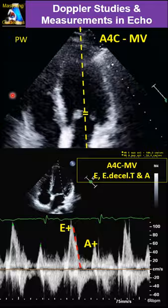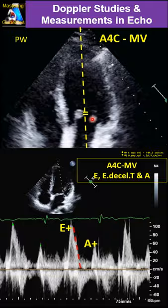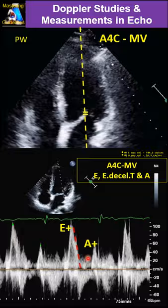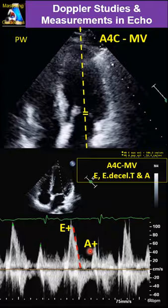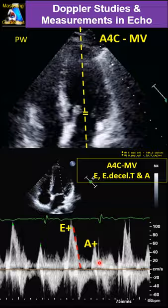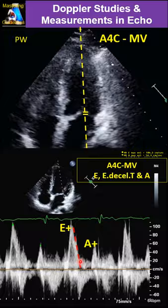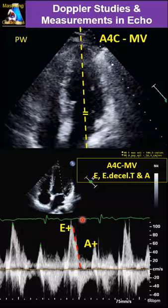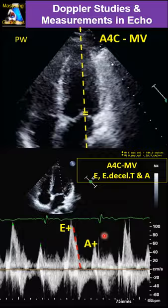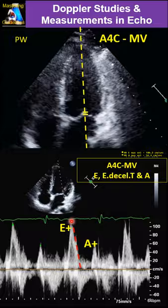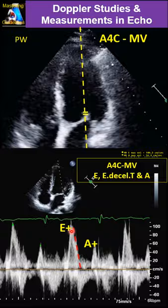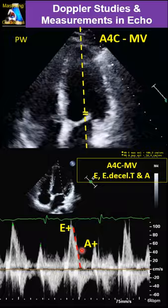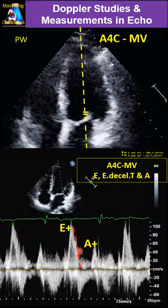Then we go to pulse wave Doppler at the tip of the mitral valve — the leaflet tips kissing each other — making it as parallel as possible. Measure E and A. E is right after the T wave, and A is before the QRS — that landmark helps a lot. Sometimes there is an L wave, indicating diastolic dysfunction, so be aware. When E and A fuse together, find the peak and draw the slope down to where they join; that endpoint is sufficient for deceleration time.